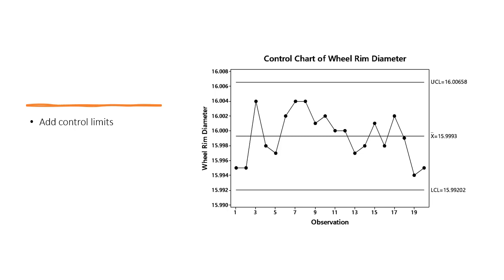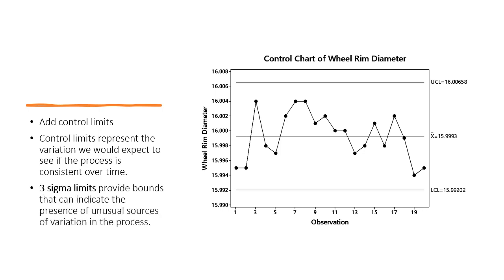Next, we add control limits. The control limits represent the normal amount of variation we would expect to see if the process is consistent over time. These are calculated using the variation of our data and are often referred to as sigma levels. Typically, the upper control limit is three sigma limits above the center line, and the lower control limit is three sigma limits below the center line. We use three sigma limits because they provide us with effective bounds that can indicate when there are unusual sources of variation affecting a process.